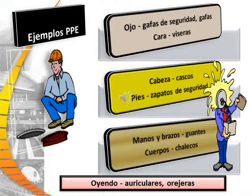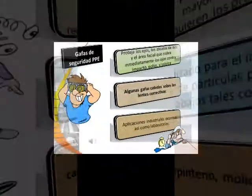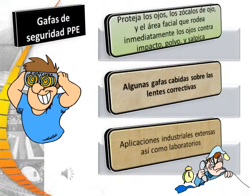Examples of Personal Protective Equipment: for the eye — safety glasses and goggles; face — face shields; head — hard hats; feet — safety shoes; hands and arms — gloves; body — vests; and hearing — earplugs and earmuffs. Safety glasses, made with metal or plastic safety frames, are required with side shields at most operations. They are used for moderate impact from particles produced by carpentry, woodworking, grinding, and scaling. Goggles protect your eyes, eye sockets, and the facial area surrounding the eyes from impact, dust, and splashes. Some goggles fit over corrective lenses, with widespread industrial uses as well as in laboratories.